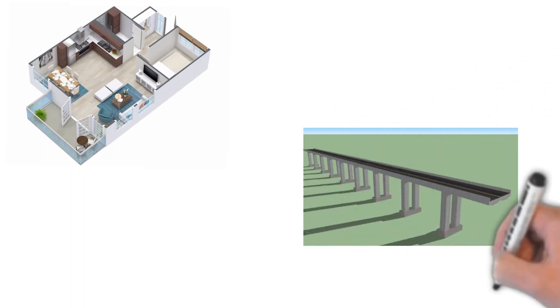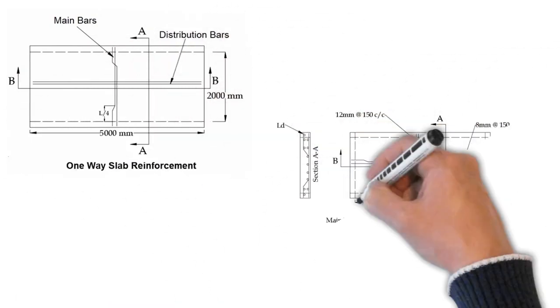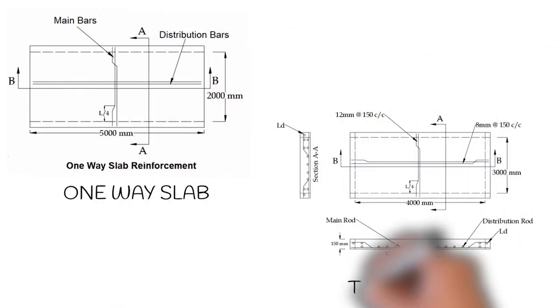Slabs are constructed to provide flat surfaces, usually horizontal, in building floors, bridges, and other types of structures. Slabs are classified into two types: one-way slab and two-way slab. So what is the difference between these two slabs? Let's start quickly.